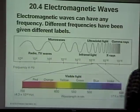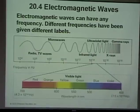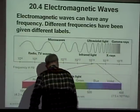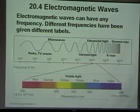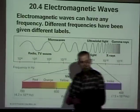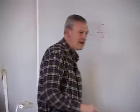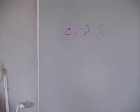Write this down: c equals lambda times the frequency. Chemistry students may be more familiar with lambda·h for spectroscopy. Here, c equals lambda times the frequency, where lambda is the wavelength.